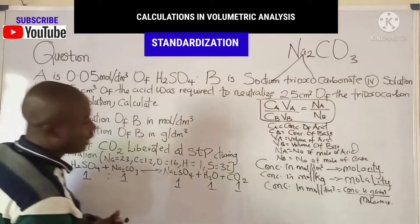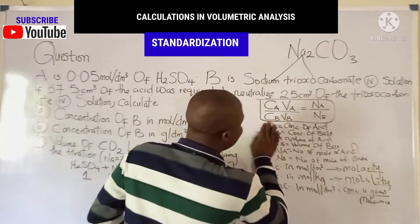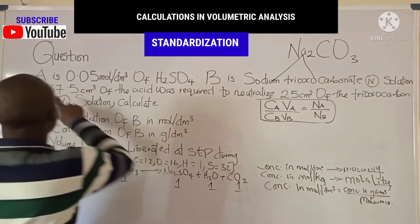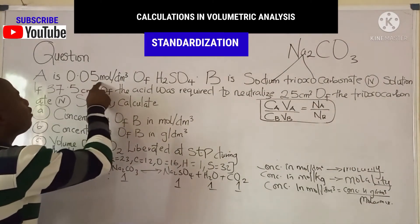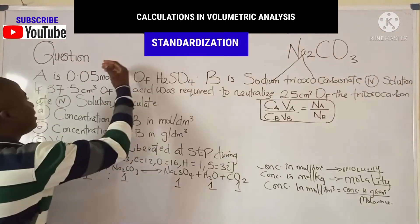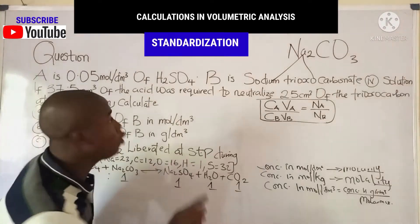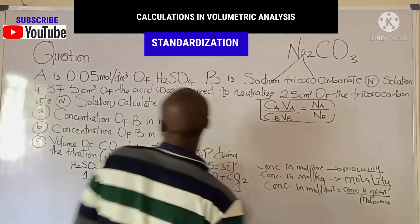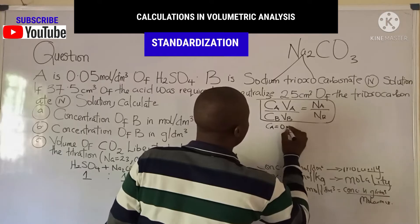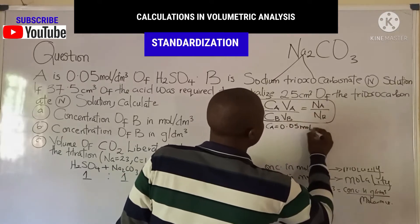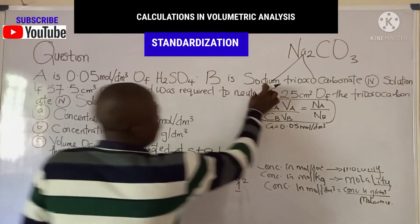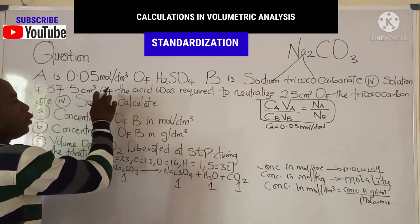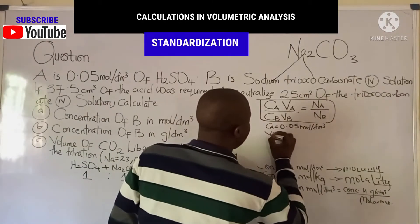Now let's extract the parameters. A is 0.05 moles per dm³ of H₂SO₄, so Ca equals 0.05 moles per dm³. B is sodium trioxocarbonate(IV) solution. The volume of acid Va is 37.5 cm³, which is the endpoint of the titration.